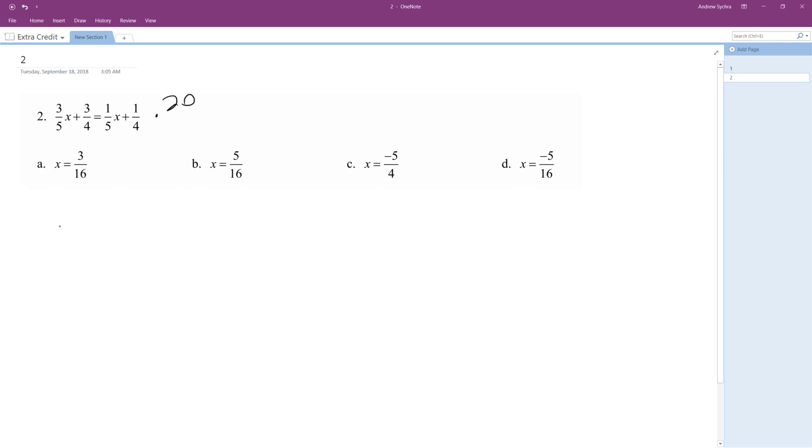So 20 times 3 fifths, or 20 divided by 5 is equal to 4, so times 3x, and let me write it like this so it doesn't cause confusion. 3 fifths x and then times 20 plus 20 times 3 over 4 is equal to 20 times 1 over 5x plus 1 over 4 times 20.